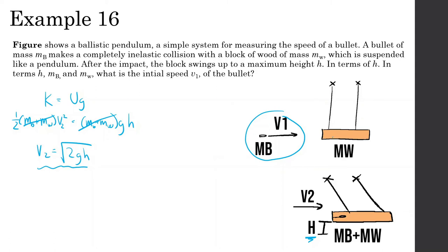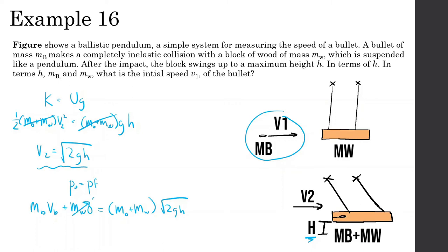Now let's find how fast the bullet was going before it hit, using conservation of momentum. Momentum initial equals momentum final. The mass of the bullet times V1 plus the wood (not moving, so zero) equals (mass of bullet plus mass of wood) times the square root of 2GH. So the velocity of the bullet equals (MB + MW) times the square root of 2GH, divided by MB.